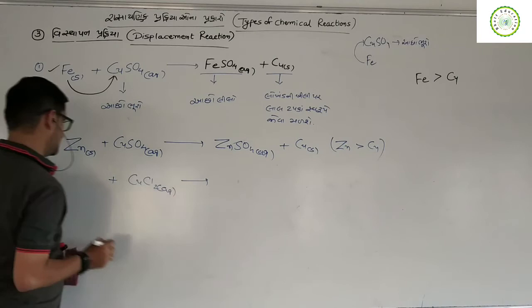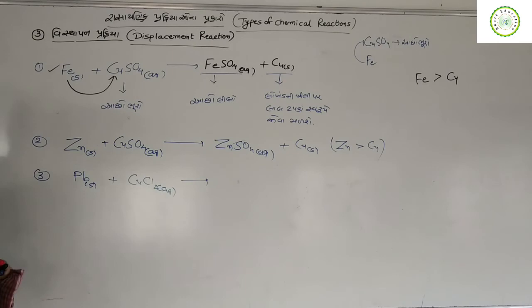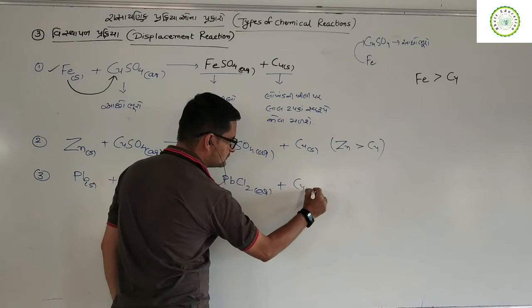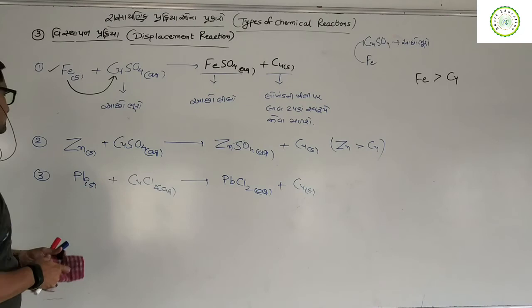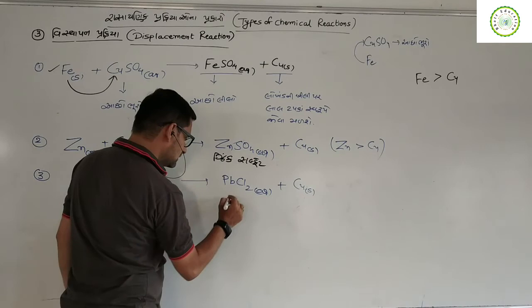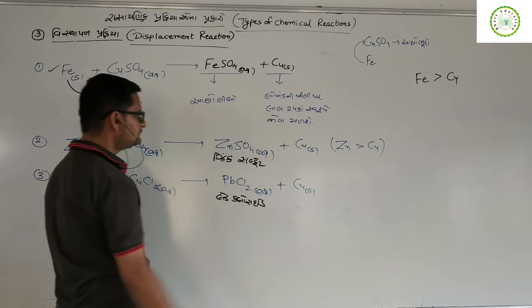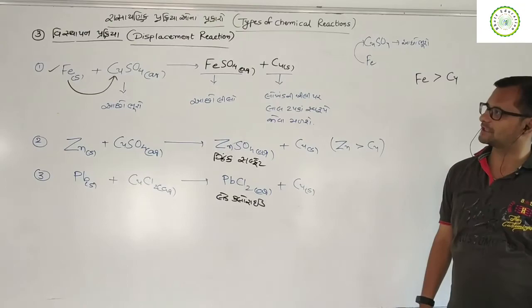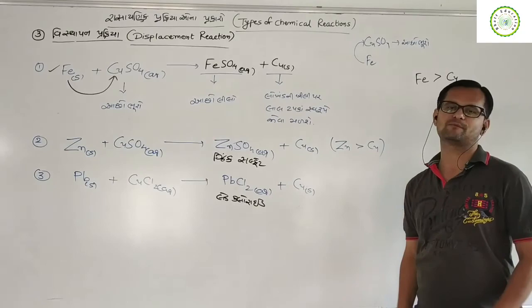So if you want to call it CuCl2, copper chloride aqueous, then you can call it. You can call it CuCl2 and then ZnCl2. Both now are able to call it CuCl2.